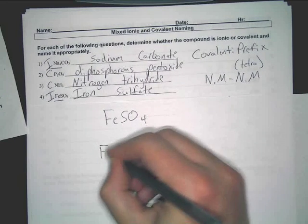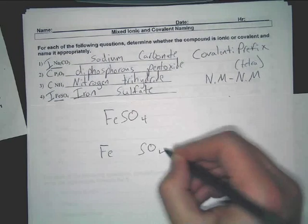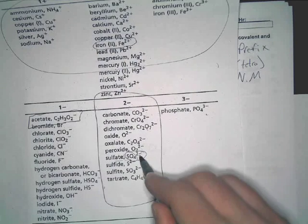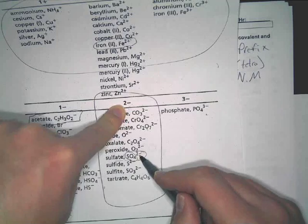we don't know what the charge is on iron, but we know the charge on sulfate is what? Negative two. You look, it's right there. It tells you it's negative two.